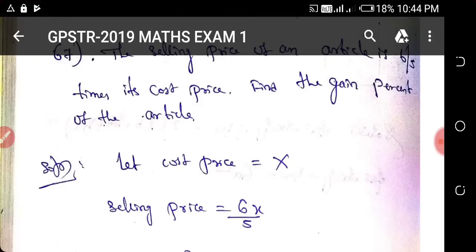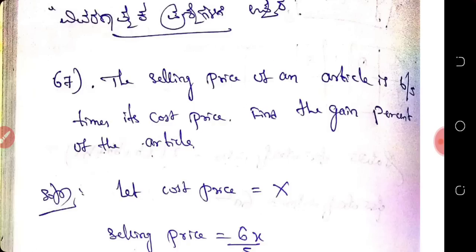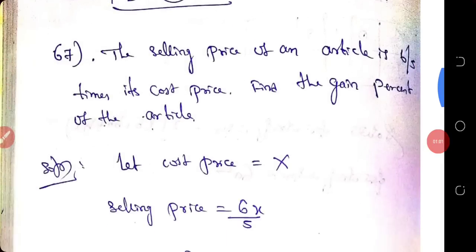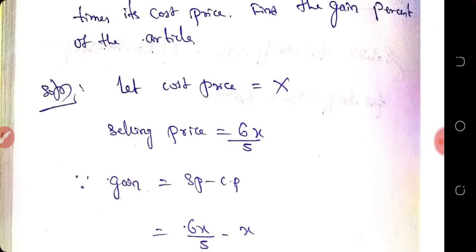The question is: the selling price of an article is 6/5 times its cost price. Find the gain percentage of an article. So let us take the cost price as X. Cost price is X. The selling price is 6/5 times the cost price.